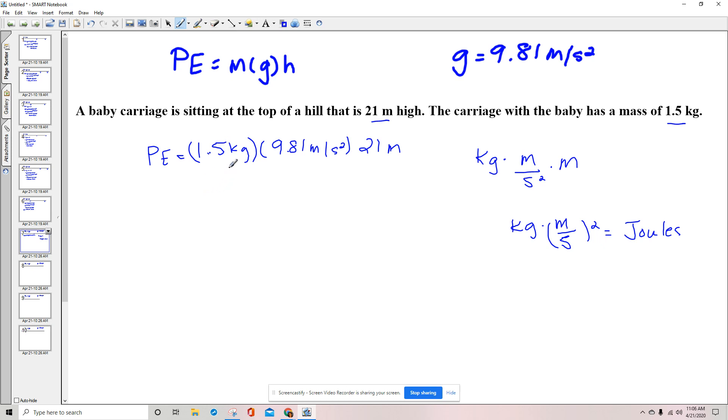So I'm going to multiply 1.5 times 9.81, which is our gravitational constant, times 21, and it's going to be 309.015. And then that's going to be kilograms times meters squared per second squared, or 309 joules.